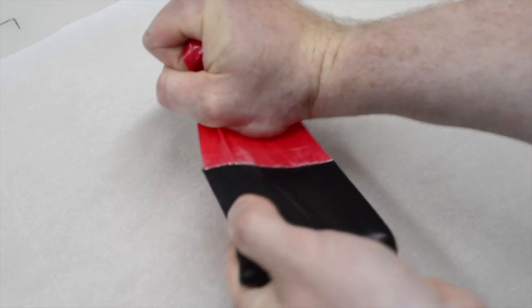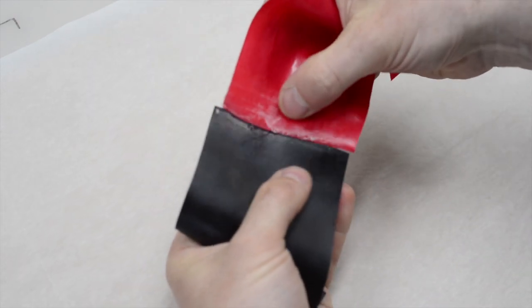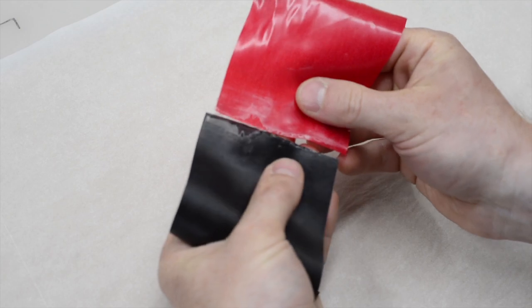Here's an example where the iron was too cool. Only a tiny patch of TPU fused together and the rest was only weakly bonded.